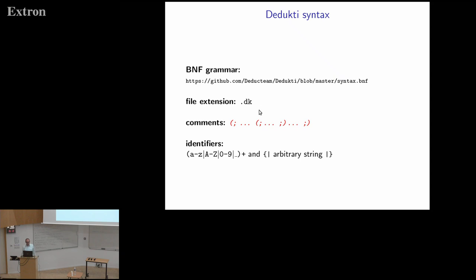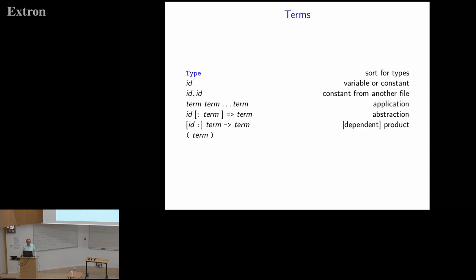Here are some examples. You can define the type N for natural numbers with constructors zero and successor, then declare addition as a definable symbol and add rules to define it. For a theorem, you use the `thm` keyword and state theorems: you give a definition which is the proof, but you don't want this proof to be unfolded later. There is no restriction on what rules you can add, and the system does not check that a definition is complete with respect to some inductive type.